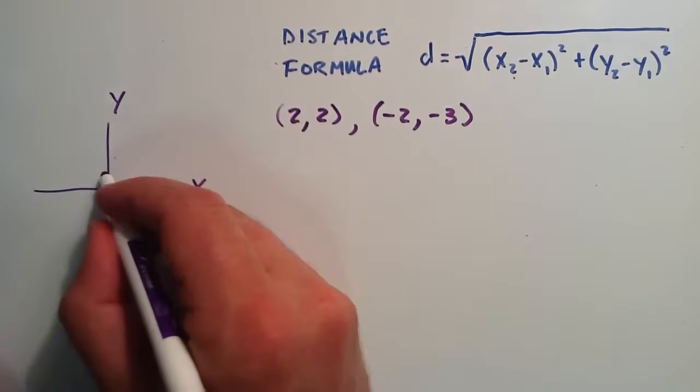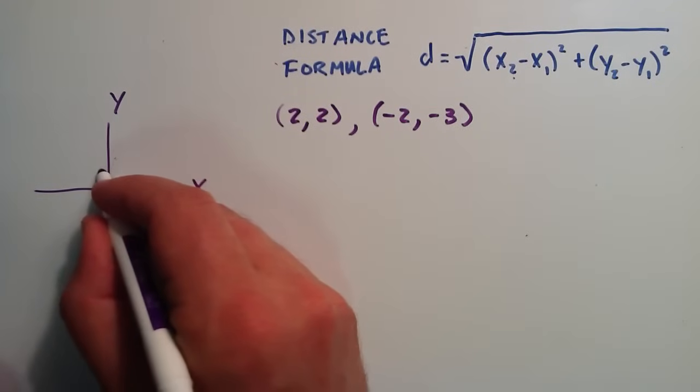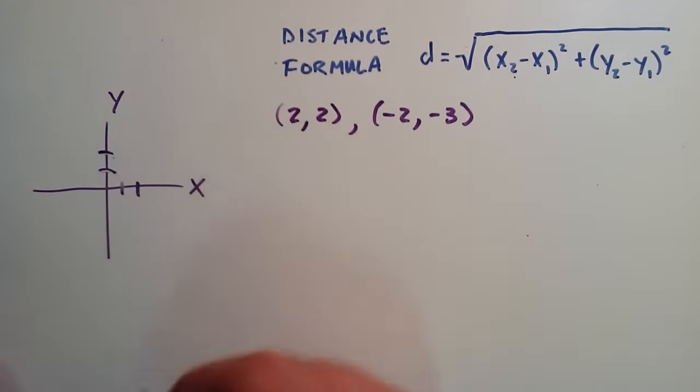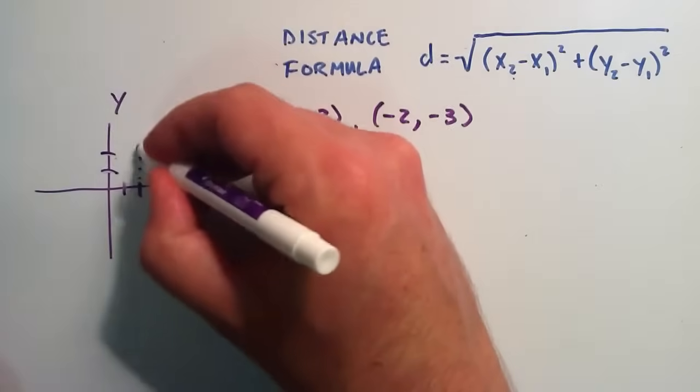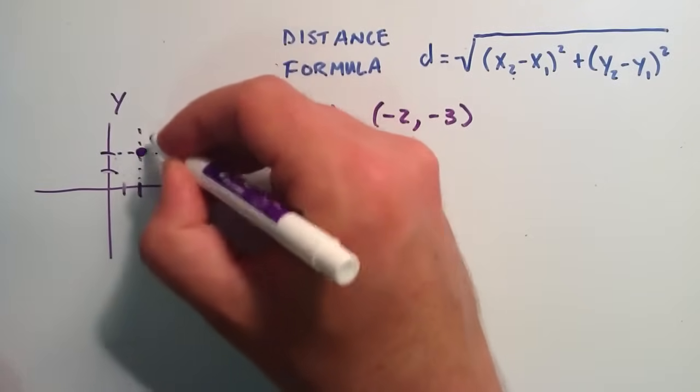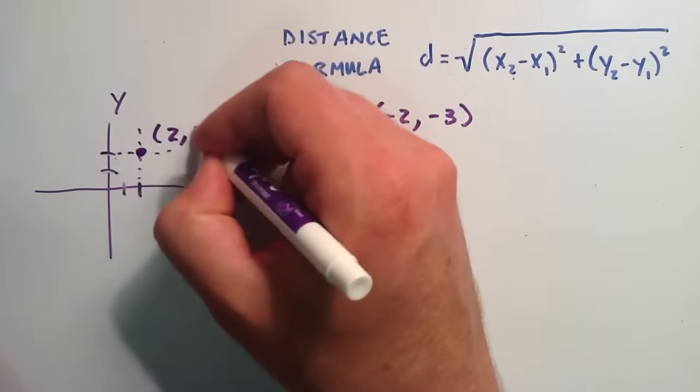And for the y component of 2, we go up from the origin, 1, 2 units in the y direction. And then where these little dotted lines cross right here, we have the point (2,2).